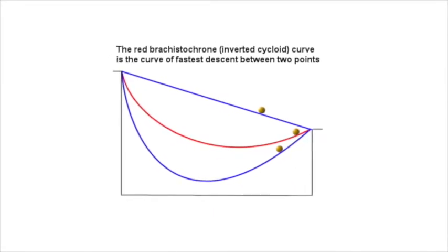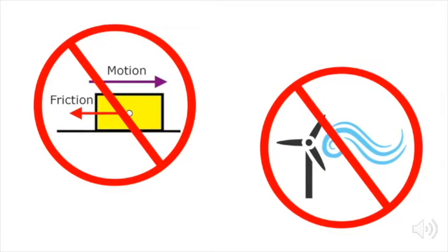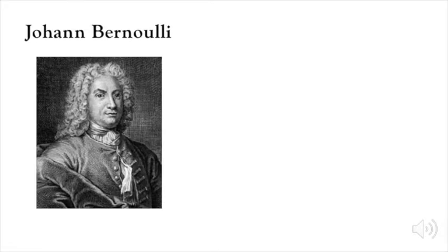In order for this to happen, there must be a constant force applied to the object and there must not be external variables like friction or wind. This curve was discovered by Johann Bernoulli back in the 17th century.